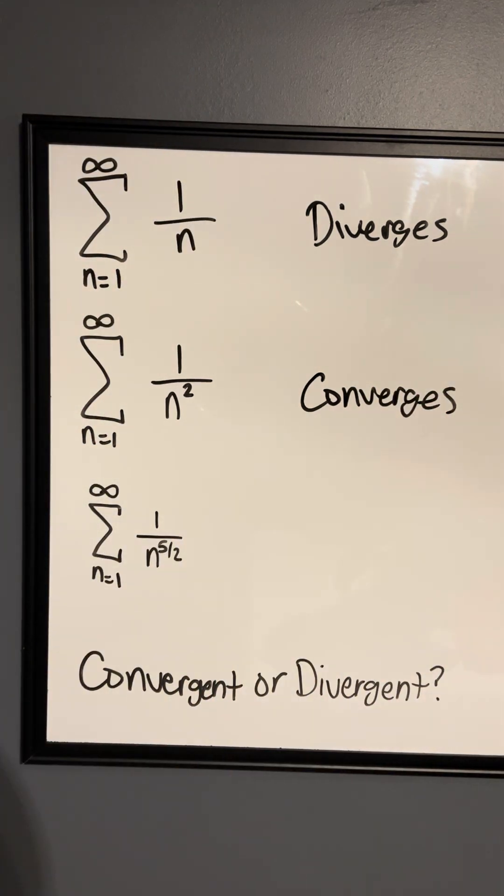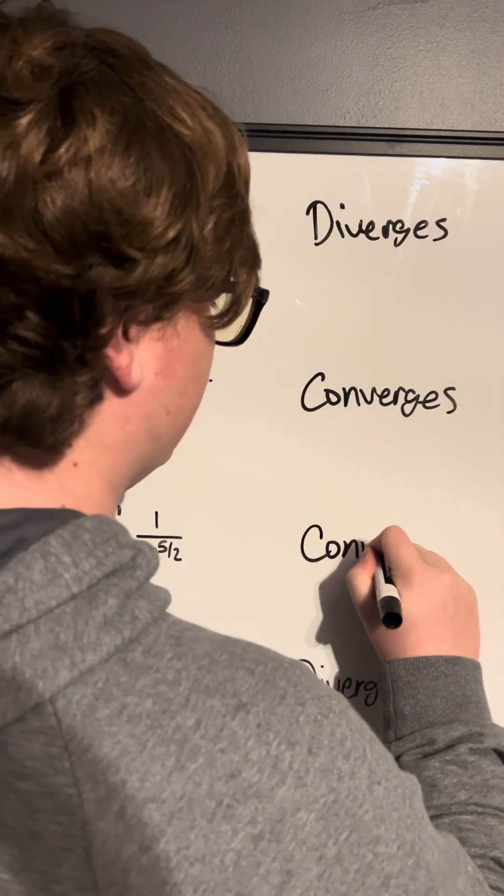And then the last one, 1 over n to the 5 halves. So if we convert 5 halves into a decimal, we get 2.5, which is greater than 1. So by definition, this p-series converges.